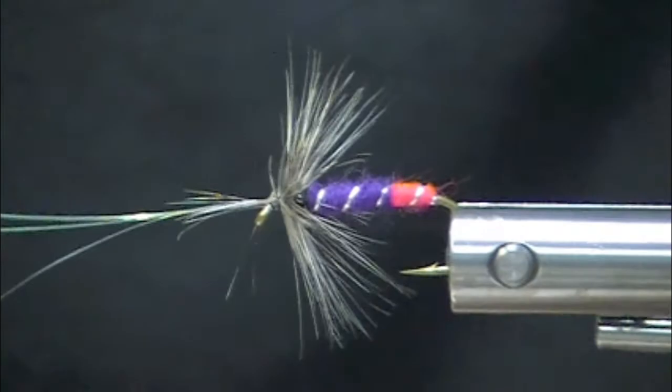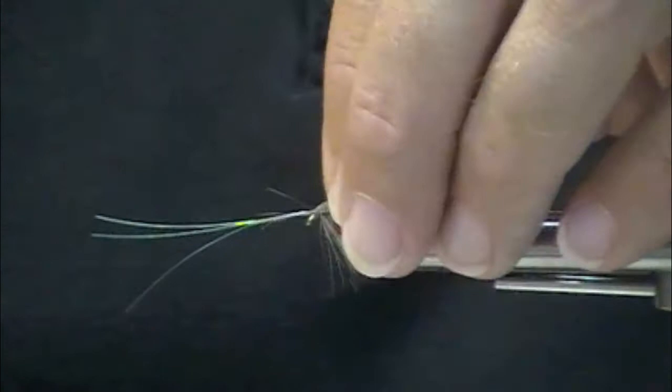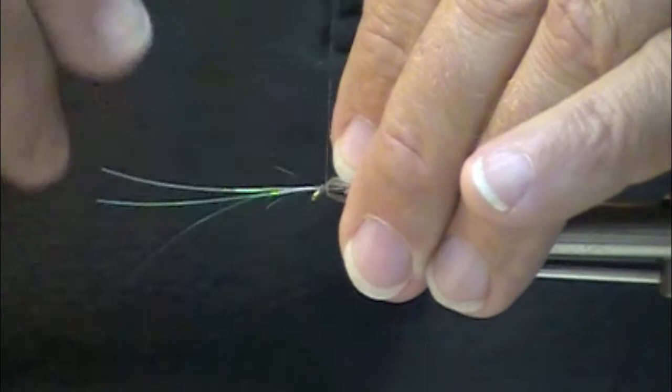Now, there is some debate over how fully one should hackle a C-run cutthroat fly. This is what I would consider a little bit on the sparse side. If you look in Les Johnson's book, you'll see a lot of those flies are very sparsely hackled.